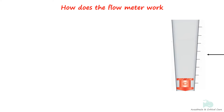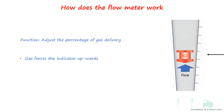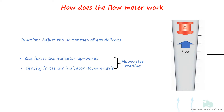Flow meters adjust the proportions of medical gases received by the anesthesia machine as well as the total gas flow delivered to the patient circuit. When the flow control valve is opened, gas enters at the bottom and flows up the tube, elevating the indicator. The indicator floats freely at a point where the downward gravitational force equals the upward force caused by gas molecules hitting the bottom of the indicator. As gas flow increases, the number of molecules hitting the indicator increases, so the indicator rises. As the indicator rises, the gap around the bobbin increases, allowing more gas to flow around it.